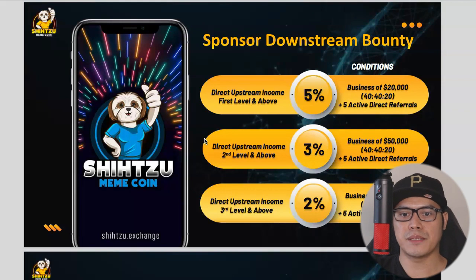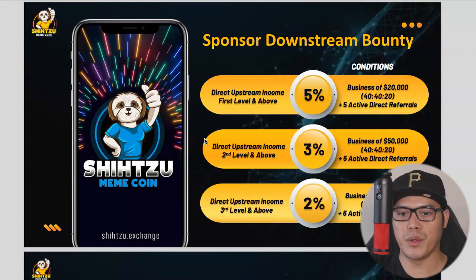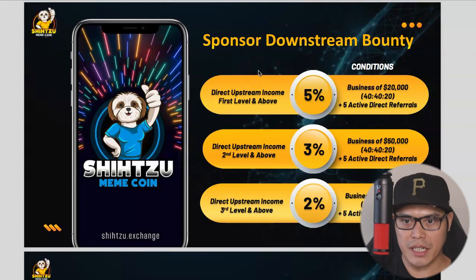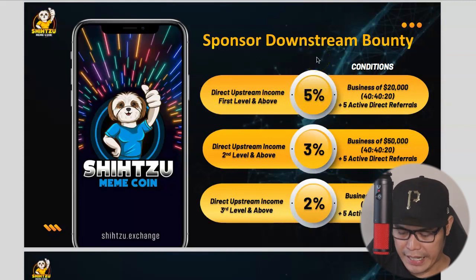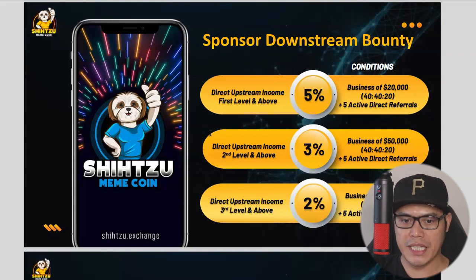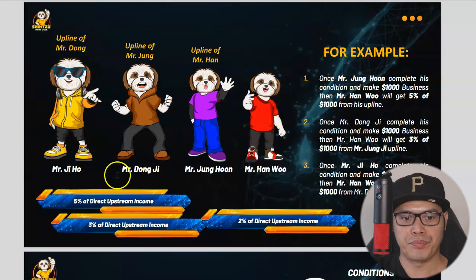They also have what they call the sponsored downstream bounty. If you join someone's team, you can leverage your sponsor's efforts and make commissions even if you are not actively working yourself — because if the people above you are doing the work and building the team, you can earn commissions as well. For direct upstream income at the first level and above, that is 5%, with a condition of $20,000 in business plus five active direct referrals.